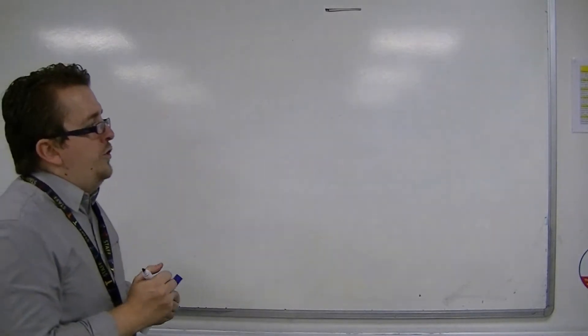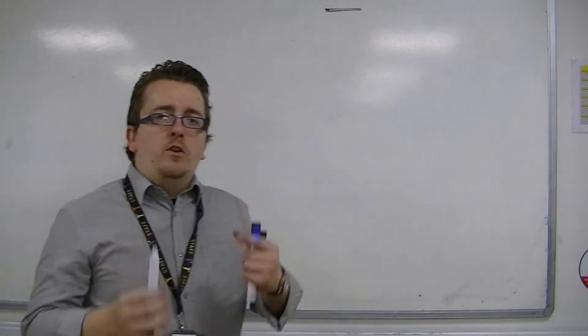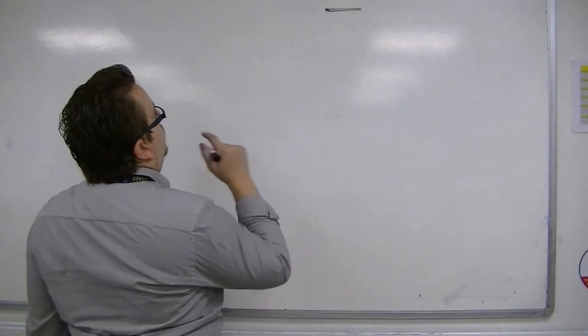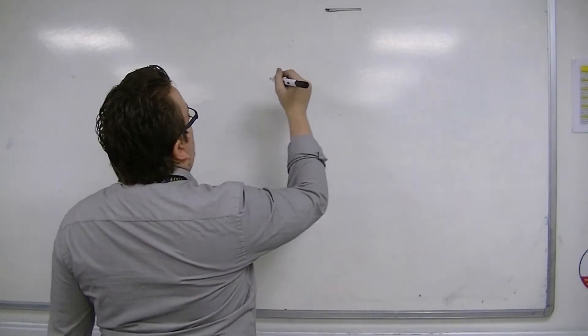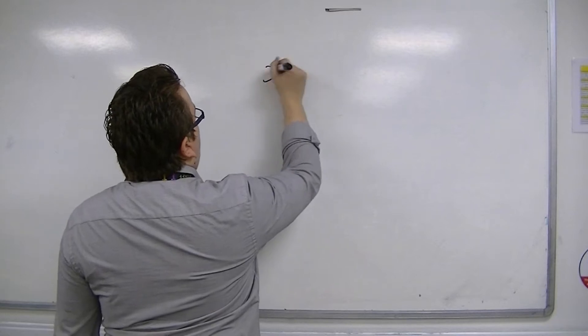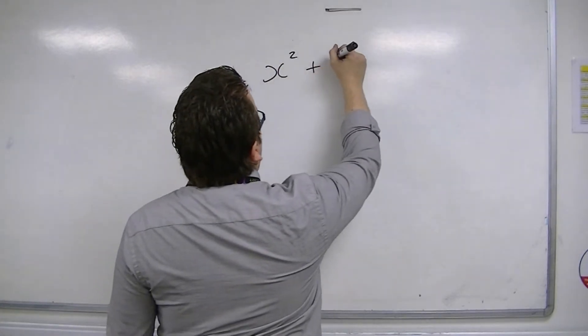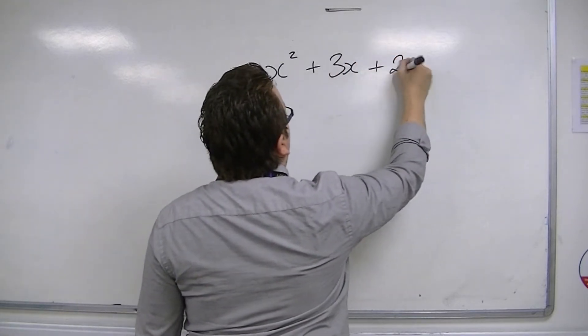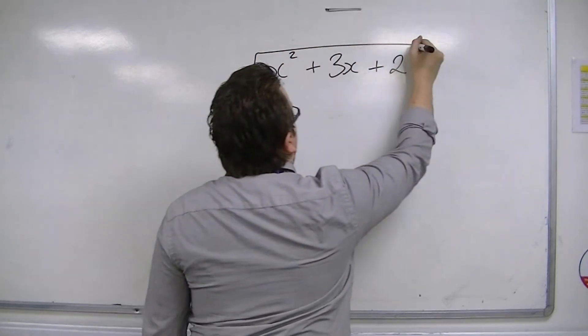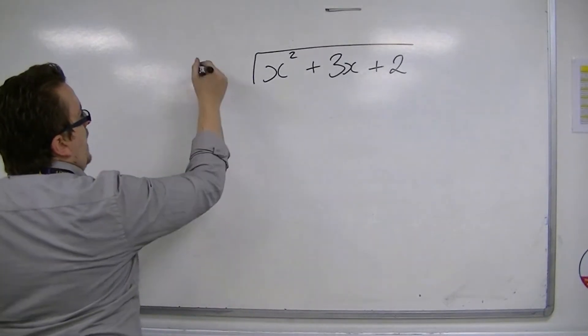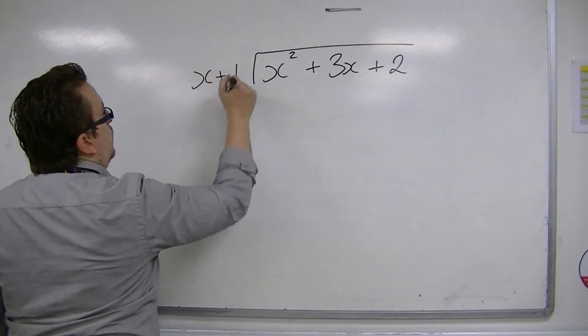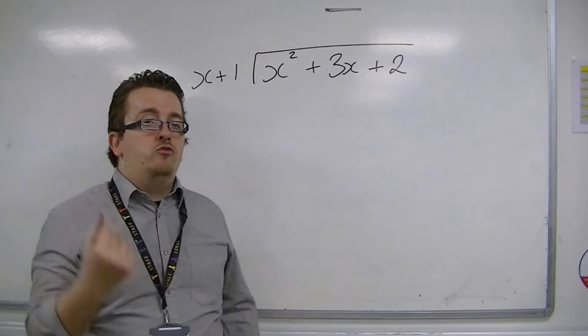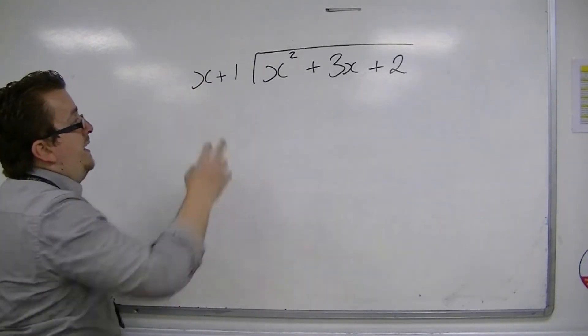So, in order to show it, I'm going to deal with quite a basic example. Let's say we've got something like x squared plus 3x plus 2, and I'm going to divide that by x plus 1. So I'm going to divide a quadratic by a linear term.